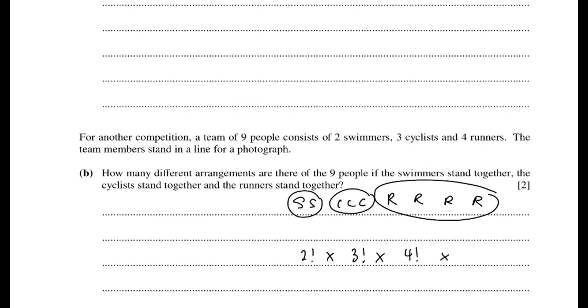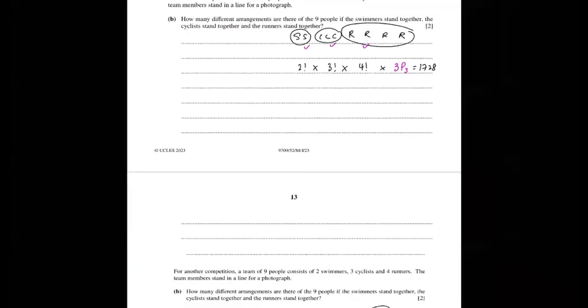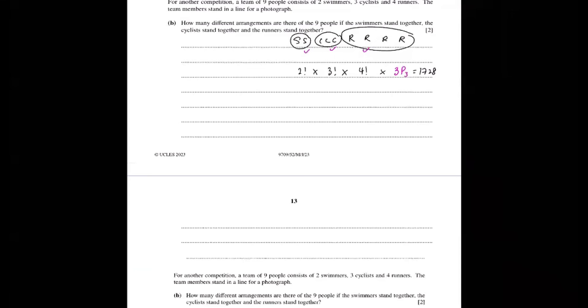Then how do I continue that? So these three things, this, this and this, it will be 3P3 or you can do 3 factorial also. So I just use a different card to show you. So it's 17,280.